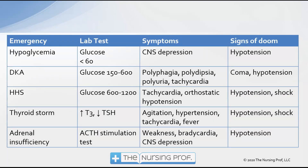To wrap up endocrine disorders: in hypoglycemia, expect a glucose less than 60, CNS depression, and hypotension as the sign of doom. In DKA, expect glucose in the range of 150 to 600, polyphagia, polydipsia, polyuria, and tachycardia as symptoms, with coma and hypotension being the signs of doom.